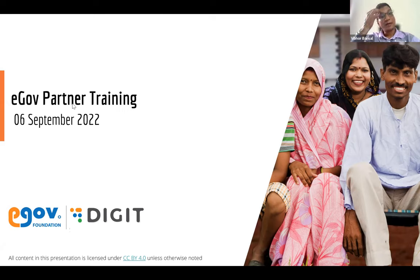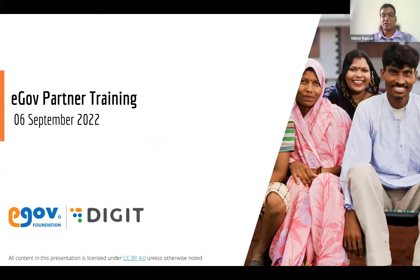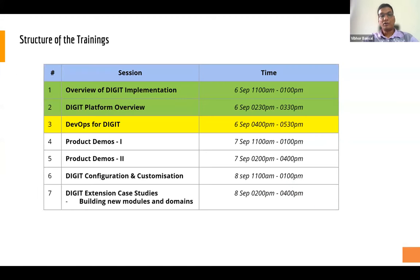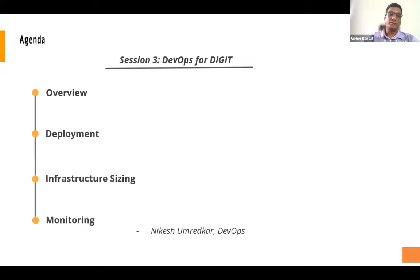Good afternoon, everybody. Thanks for joining back with this, the last session of the day. We have, since morning, come to know about what eGov is doing in urban local bodies, digitization, how we're supporting e-governance with the help of the DIGIT platform. We also went through the platform overview in terms of architecture, microservices, etc. Now in this session, we'll cover DevOps by Nikesh Umritkar, where he will give an overview of DIGIT DevOps - how we deploy it, how we plan for infrastructure, and how we monitor the same.